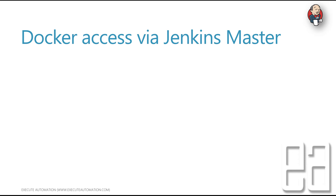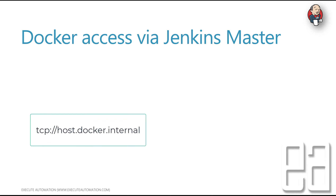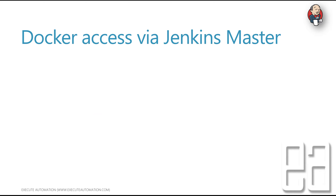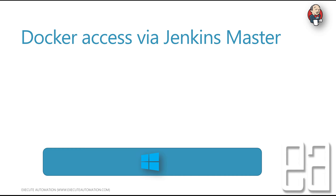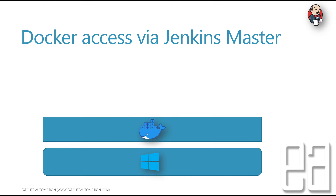In our last video we discussed how we can connect a Jenkins master container to the host Docker running on my local Windows machine. To holistically see what really happened in our earlier video while we were configuring with the TCP of host.docker.internal — this is what happened. I currently have a setup where I have a Windows 10 machine with Docker for Windows running on it, and all these days we have been spinning our Jenkins master from a container.